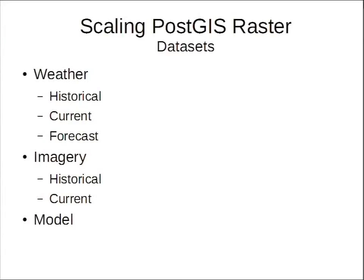The big datasets I've been dealing with are mostly weather, imagery, and model data. Weather includes historical daily data from the 1950s onward, current data on what's happening right now, and forecasted data — hourly for the next three days for the US and Canada. For imagery, we pull in as much Landsat and NAIP data as we can. Modeled surfaces like soil composition help inform what your field's soil is made of, enabling better decisions.